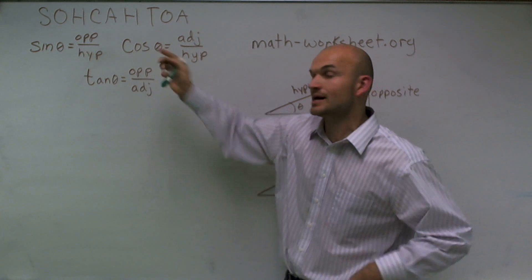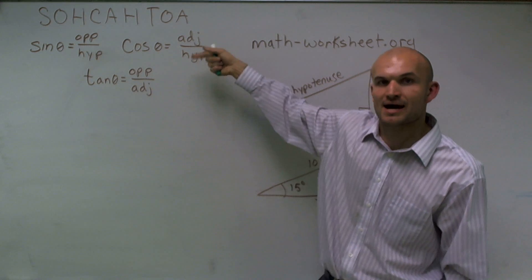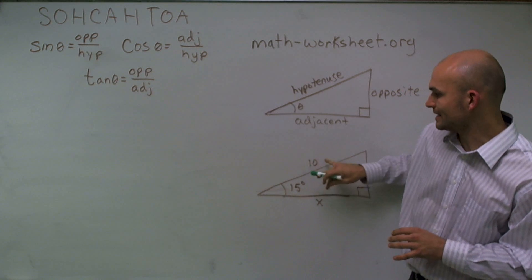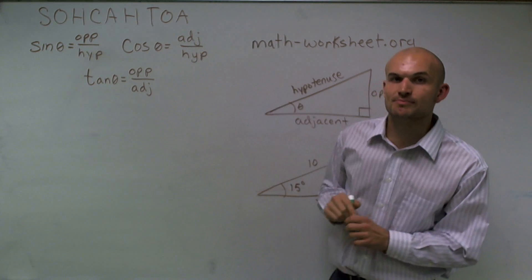However, for using the cosine, I'm only going to have to know the adjacent and the hypotenuse. So what I can do is I'm going to use my adjacent, my hypotenuse, and my angle theta to plug it into my cosine function.